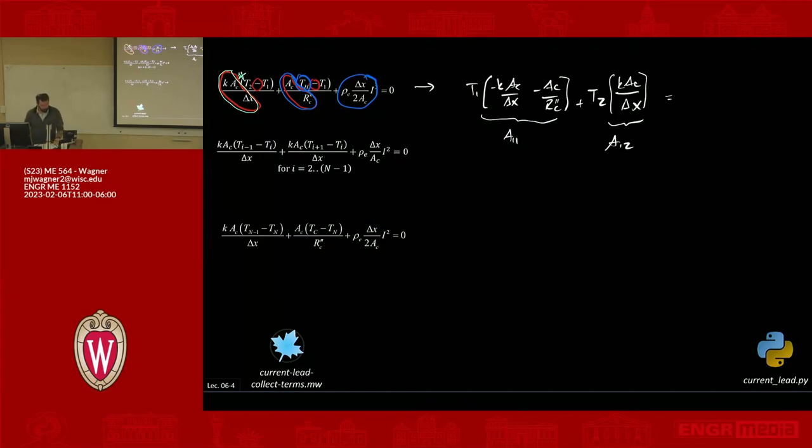All right, so I'll bring that over, and that is minus ac times t_h over r_double_prime_c minus rho_e delta_x over 2ac i squared. Okay, this is b1. Does that make sense? We're just coming up with a linear equation. We have t1 constant, t2 constant equals b.